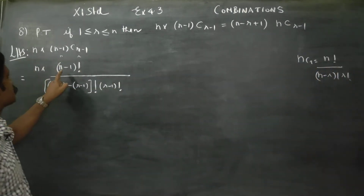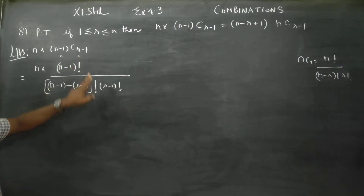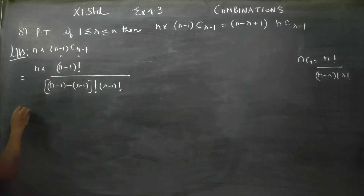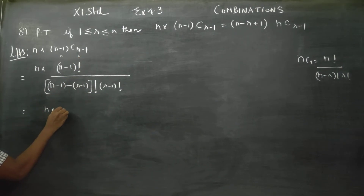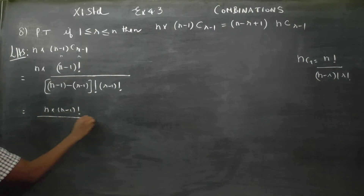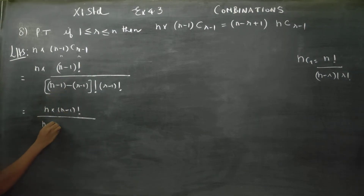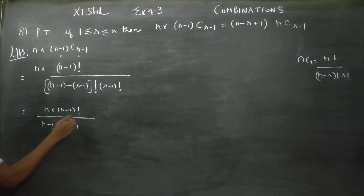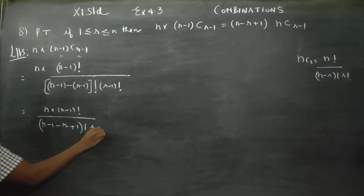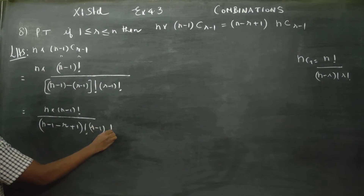Stage number 2. Substituting n with n minus 1, and r with r minus 1 into the formula: n into n minus 1 factorial by n minus 1 minus r plus 1 factorial, into r minus 1 factorial.